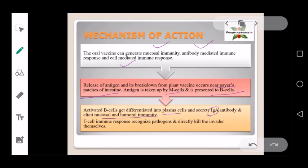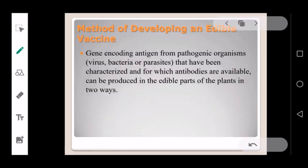Edible vaccines also affect T cells. The T cell immune response recognizes pathogens and directly kills the invading organism. This describes the methods of developing an edible vaccine.